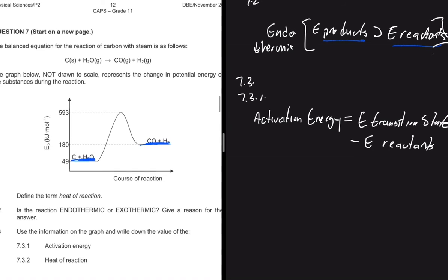So we have the transition state energy here, right here at the peak. And then the energy of the reactants right here. So if we substitute, we're going to have 593 minus 49. So if you say 593 minus 49, we should get 544 kilojoules per mole. And that's what our activation energy is.